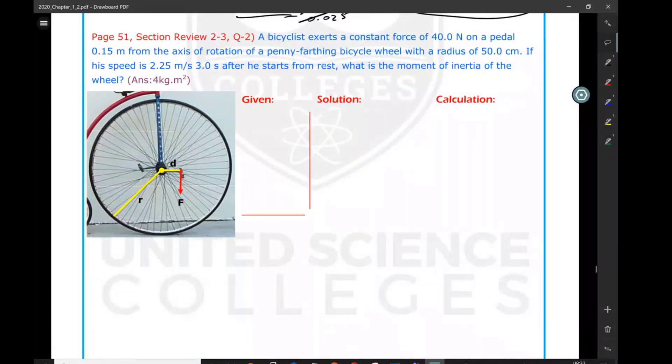A bicyclist exerts a constant force of 40 N on a pedal 0.15 m from the axis of rotation of a penny-farthing bicycle wheel with a radius of 50 cm. If his speed is 2.25 m/s three seconds after he starts from rest, what is the moment of inertia of the wheel?